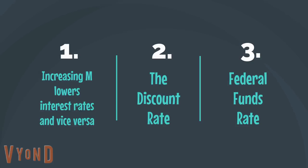The interest rates we're interested in: one is called the discount rate — the rate at which banks borrow from the Fed, which is always the lowest interest rate in the economy. Banks can also borrow from each other, paying something called the federal funds rate, which is also under the jurisdiction of the Federal Reserve. So the Fed looks at the money supply, the discount rate, and the federal funds rate, and decides what to do.